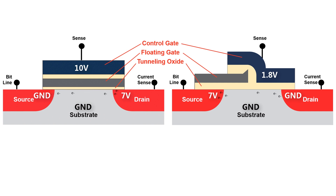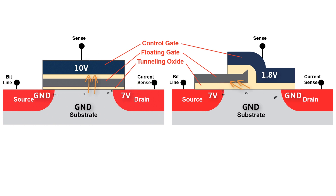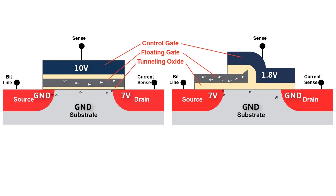So the gate is turned on and the electrons flow through the transistor. Because of this high voltage, all electrons crossing the channel are seeing lots of electric field pulling them up, and some electrons will gain enough energy at just the right point to tunnel through this very thin oxide. These electrons are actually trying to reach the high voltage, and maybe some will, but many will lose enough of their energy on the journey to get trapped on the floating gate.